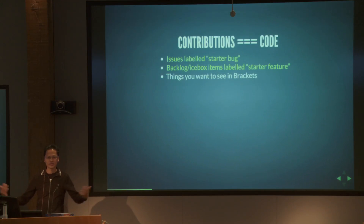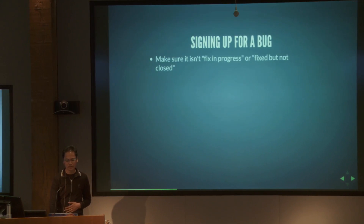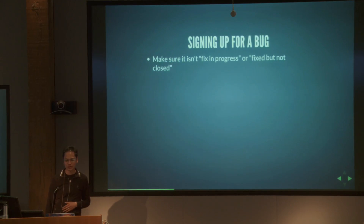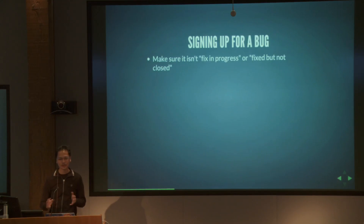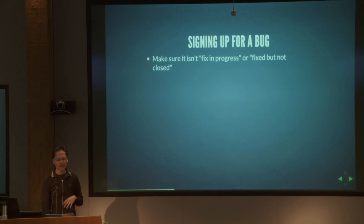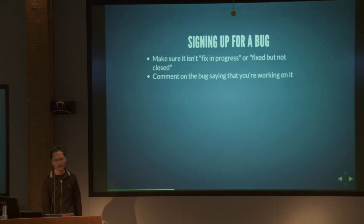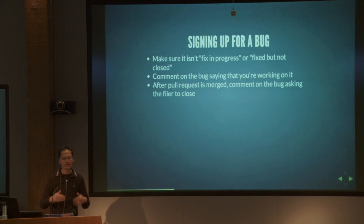Really what we're interested in is what do you want to see in Brackets — what ideas do you have? If you pick a particular bug in the issue tracker, we mark bugs as 'fixed in progress' if somebody's working on it, or 'fixed but not closed' if a pull request has been accepted but not verified. Make sure the bug you want doesn't have either of those labels. Just comment on the bug saying you're working on it, and after your pull request is merged, ask the filer to verify the fix and close it.